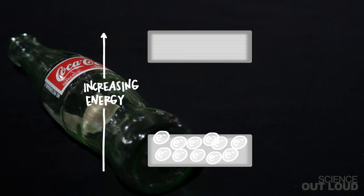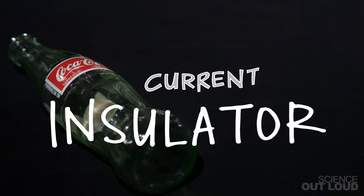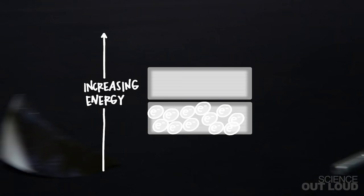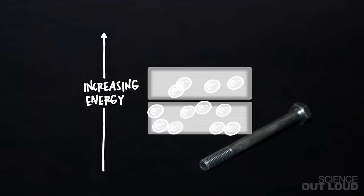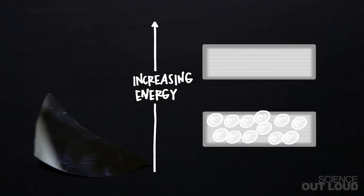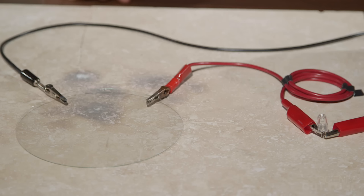For a material to conduct, electrons must be able to jump from lower energy states to higher ones. The spacing of these energy levels and how they're filled with electrons determines if the material is a conductor, insulator, or semiconductor. If there's a huge gap between the lower energy levels and the higher ones, it's hard for electrons to jump, so current can't flow — and it's an insulator, like glass. Metals have no gap at all, so electrons can move to higher energy levels with no problem and current can flow.